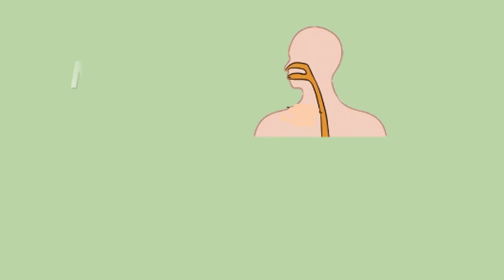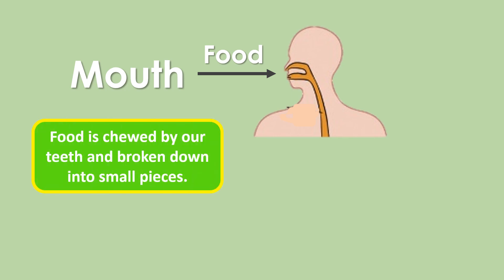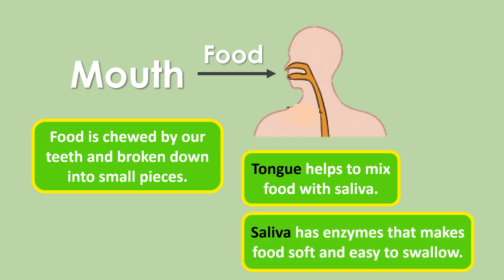We intake food through the mouth. Digestion begins in the mouth itself. Food is chewed by our teeth and broken down into small pieces. The tongue helps to mix food with saliva. Saliva has enzymes that make food soft and easy to swallow.